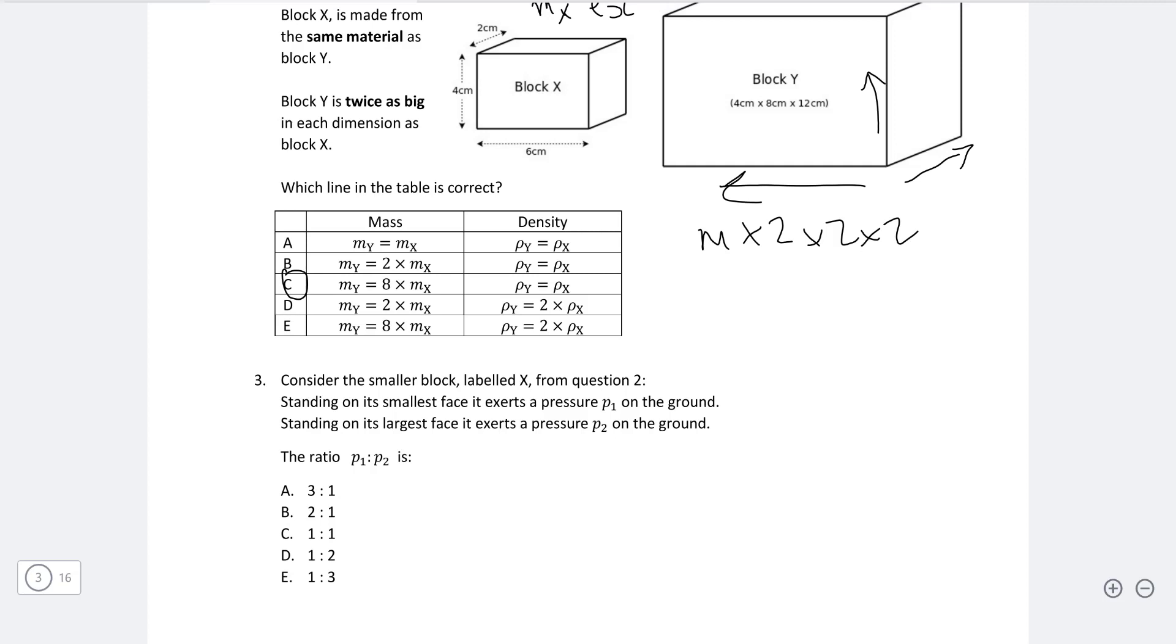So the smallest face will exert pressure P1. So this means that P1 will be equal to the weight of the block divided by the area. Now the smallest face is going to be given by four centimeters by two centimeters. So that's going to be the weight over four by two, which is going to be eight centimeters squared.